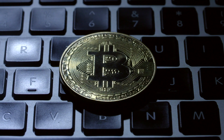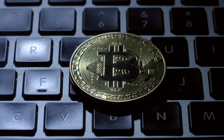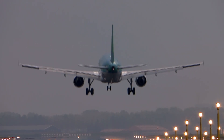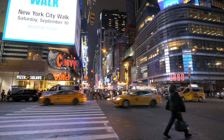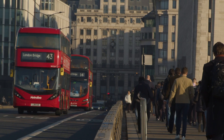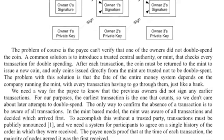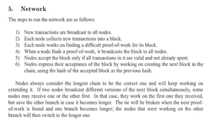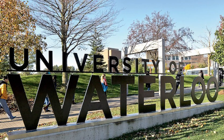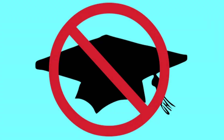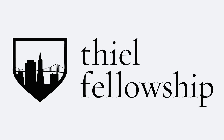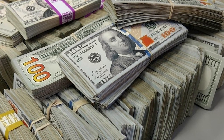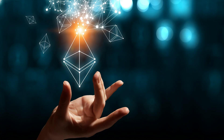Buterin learned about Bitcoin from his dad when he was 17. Then in 2013, he visited developers in other countries who shared his enthusiasm for code. He returned to Toronto a year later and published a white paper proposing Ethereum. At the time, he attended the University of Waterloo, but dropped out in 2014 when he received the Thiel Fellowship in the amount of $100,000 and went to work full time on Ethereum.